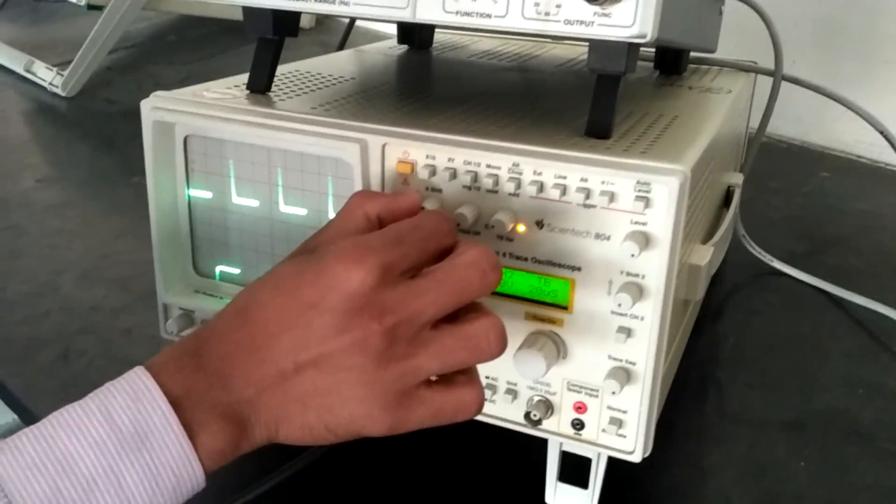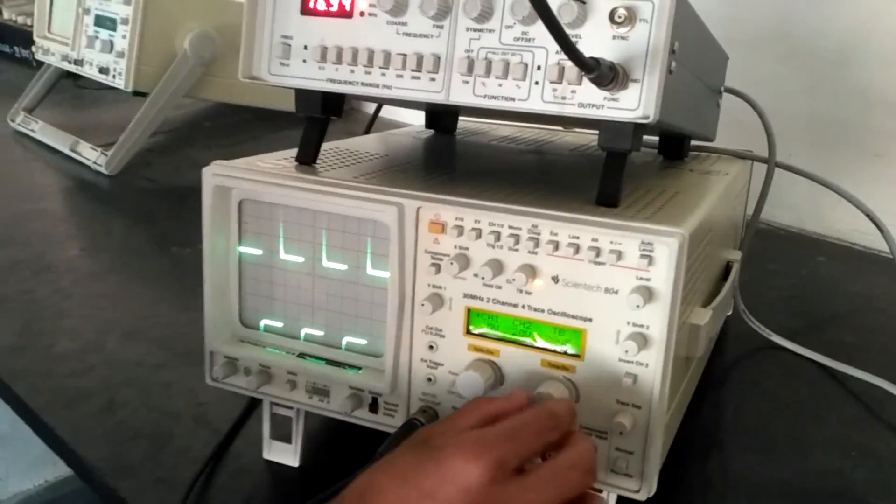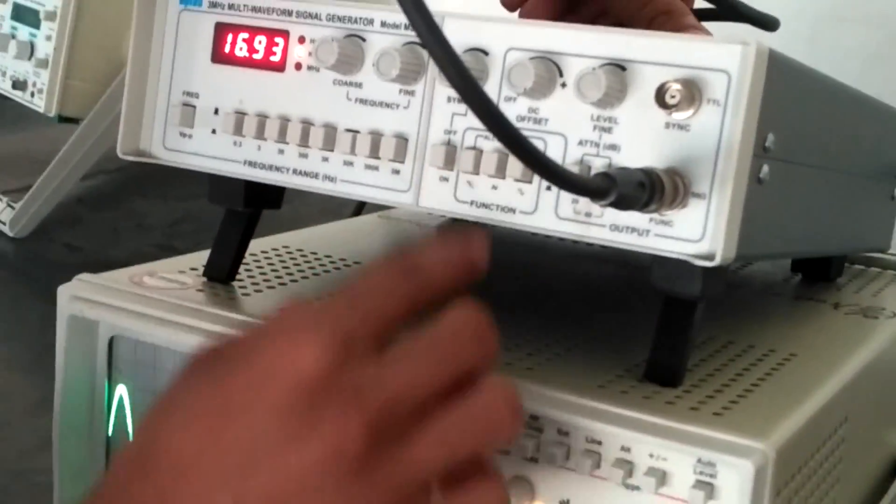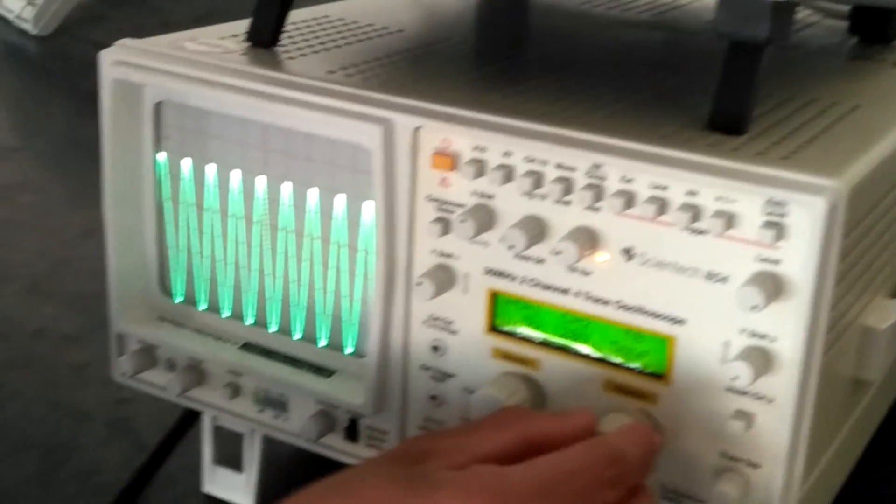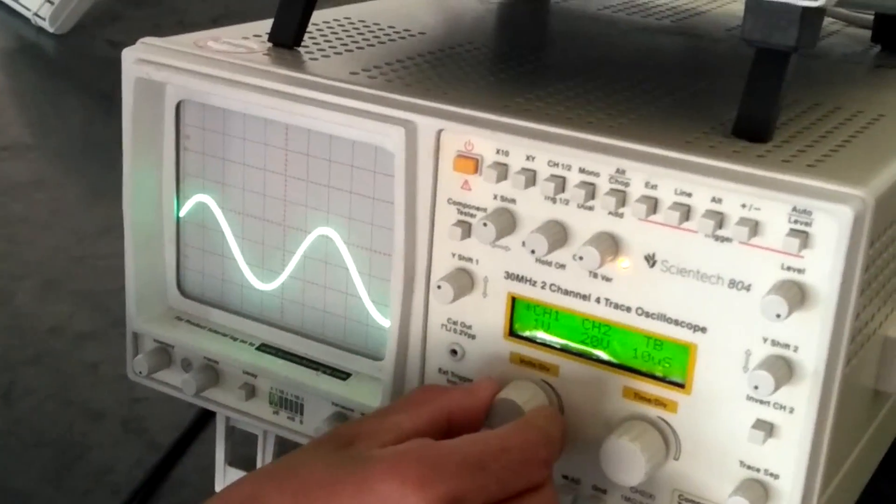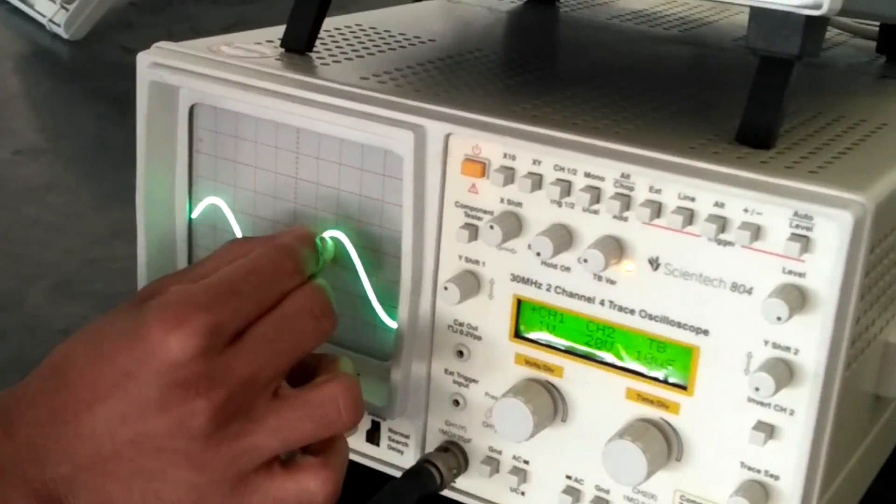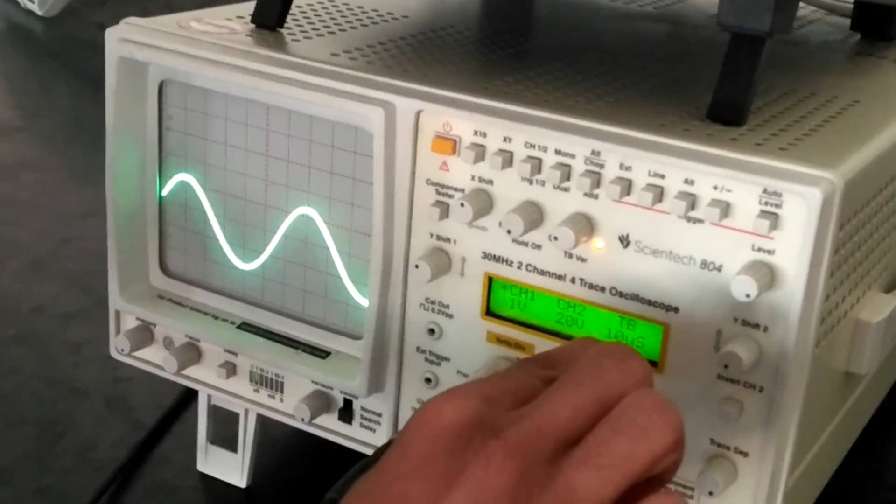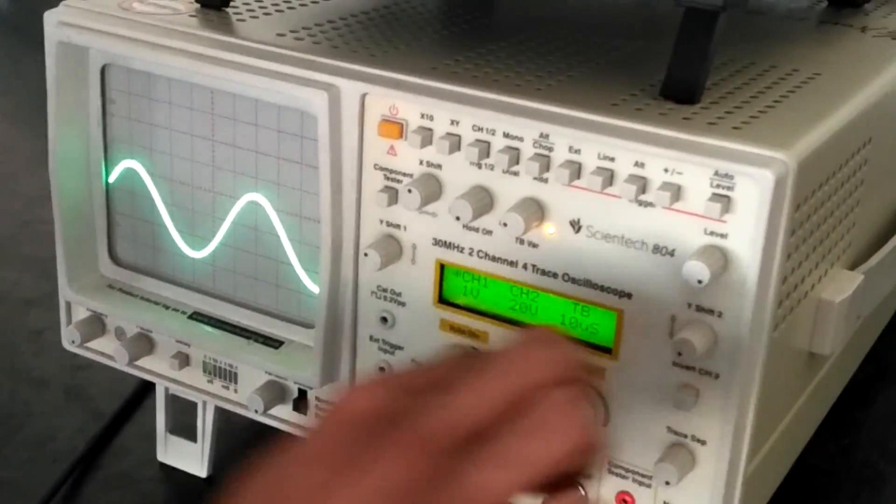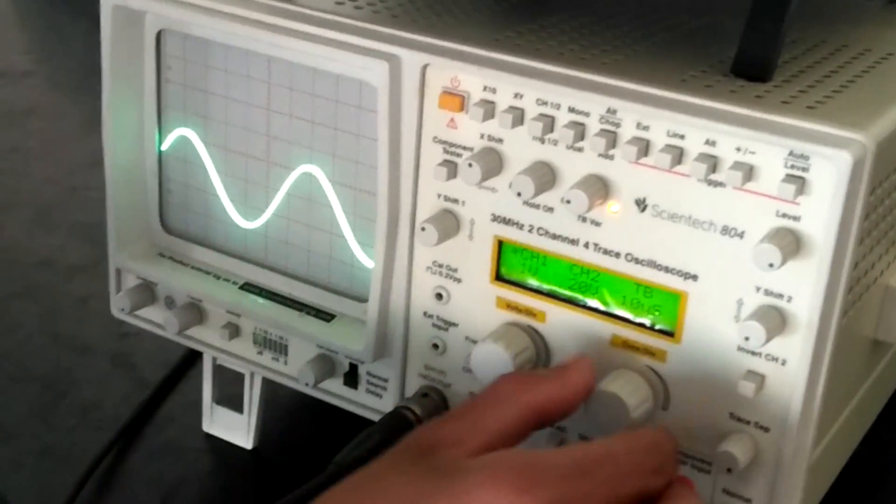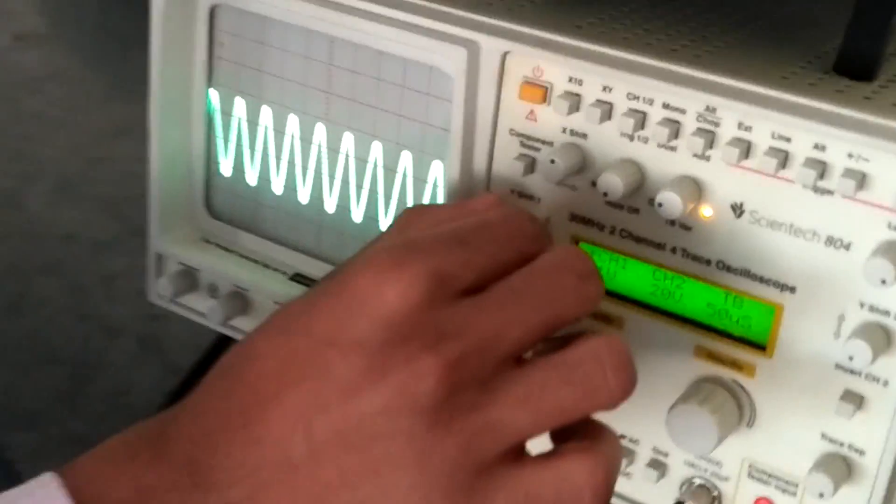But X-shift is common for both the channels. So this is the time base, that is for each square the time is 10 microseconds for each division. We can also change it accordingly.